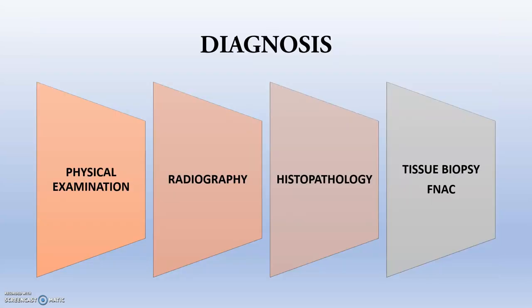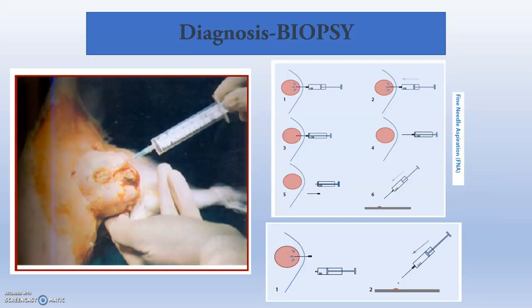Diagnostics include physical examination, radiography, histopathology, and tissue biopsy by fine needle aspiration cytology (FNAC). Physical examination alone cannot definitively distinguish benign from malignant CMT. Radiography helps rule out metastatic findings, while histopathology and tissue biopsy provide the best diagnostic accuracy. Fine needle aspiration cytology is demonstrated here as the preferred biopsy technique.